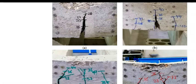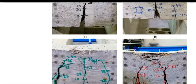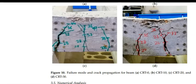All beams failed in flexure regardless of CRT content. However, at 20% and 30% replacement level, multiple crack propagation was observed. This may be due to the stiffening effect and the changes in the bond between the concrete and the steel reinforcement after the increase in the CRT content.